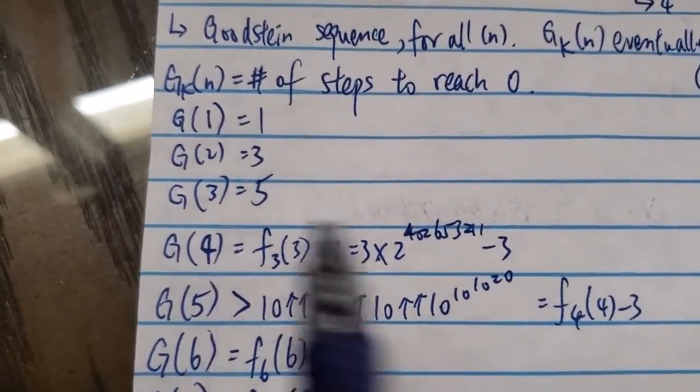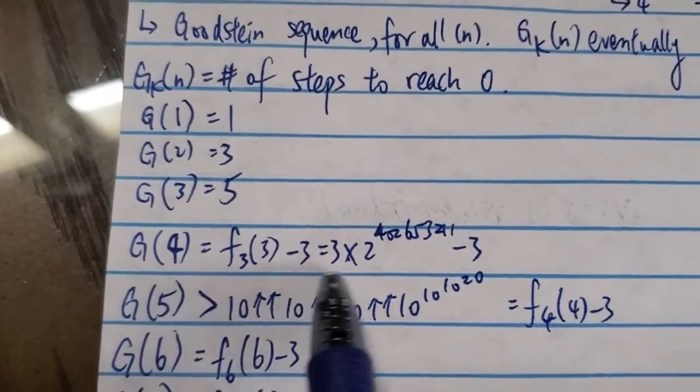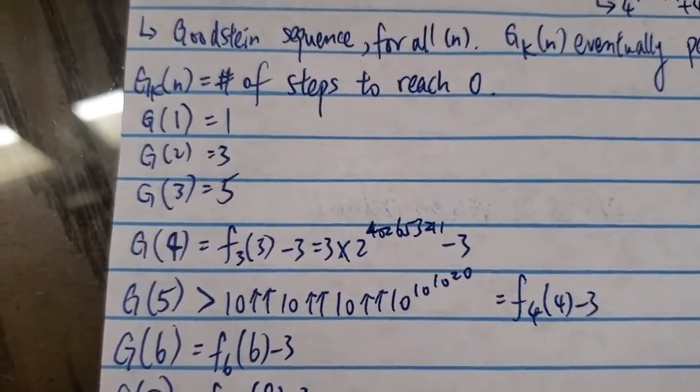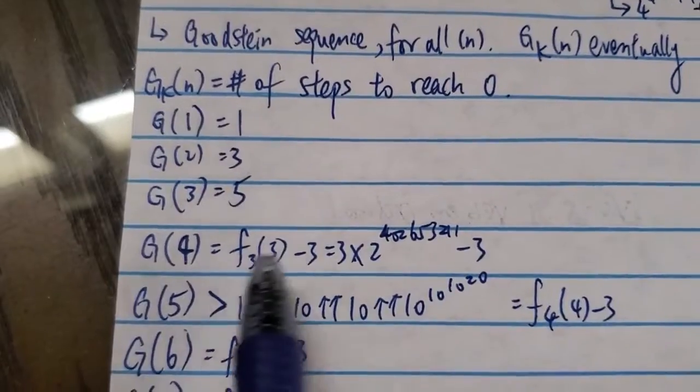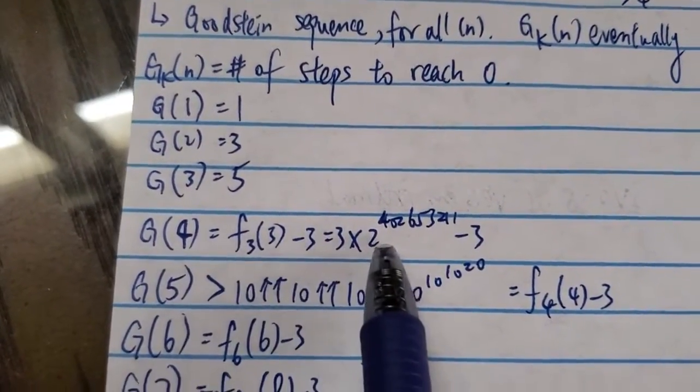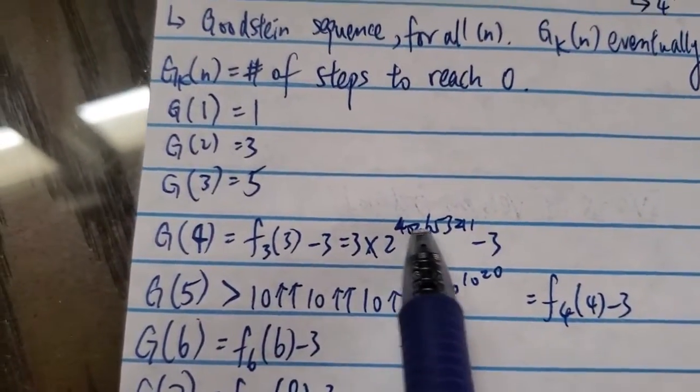However, the number 4, suddenly, it becomes a very big number. I mean, the number of steps to reach zero for the number 4, it takes around this many steps. So this is a very big number.